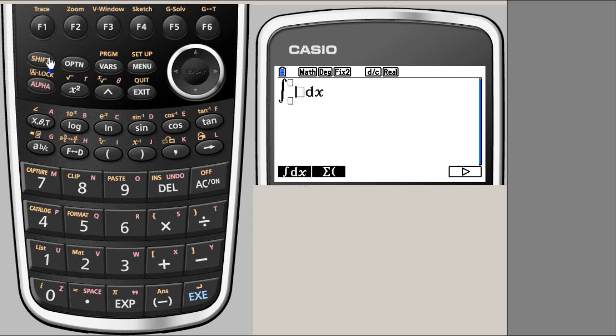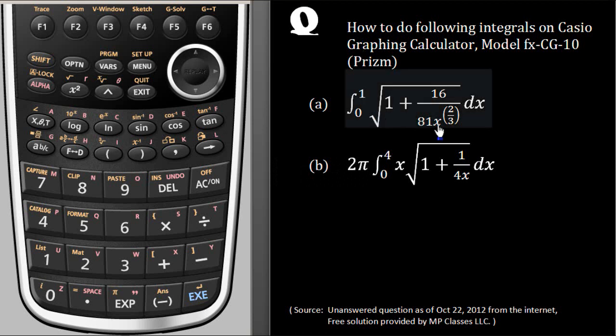Now ready to insert the data. We need square root of 1 plus 16 over something, so we need square root, which is shift. That's the square root, and 1 plus 16 over 81 something. That means a fraction is required: 16 over 81.